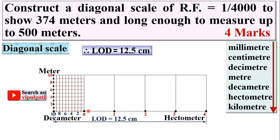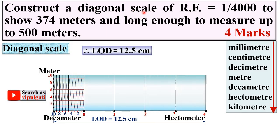Now draw the diagonal lines. You can see this is the diagonal of the triangle, and that is why it is known as a diagonal scale. The diagonal lines are parallel to each other. This completes the diagonal scale — the first task is done.